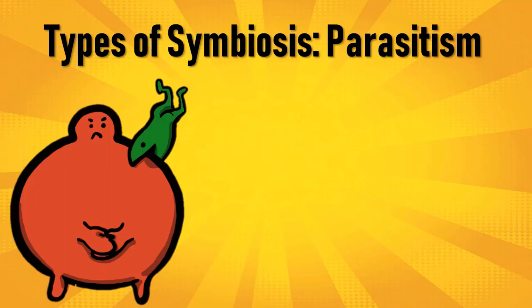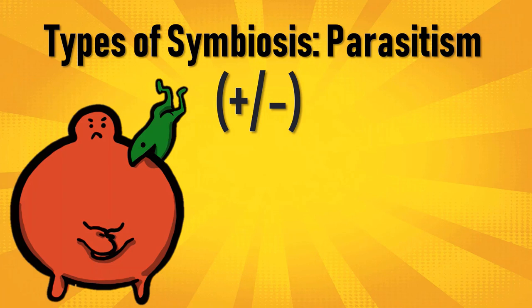Parasitism is the type of symbiotic relationship wherein one species is benefited whereas the other one is harmed. It's like a classmate exchanging answer sheets without your knowledge during an exam — they will benefit from your scores whereas you will be harmed.